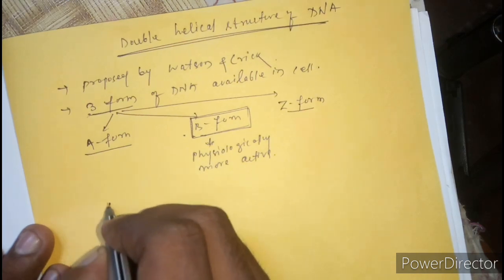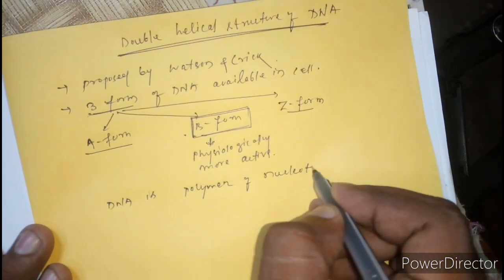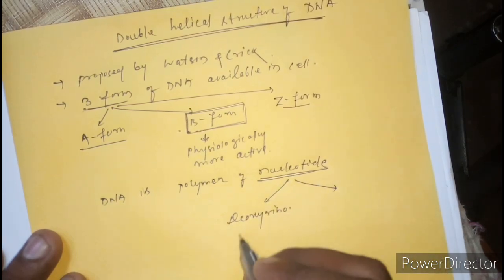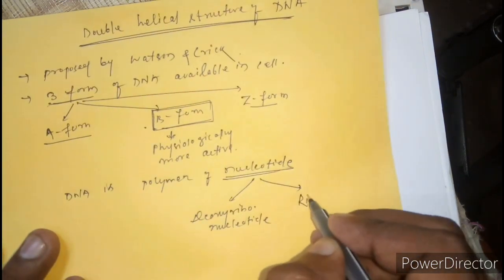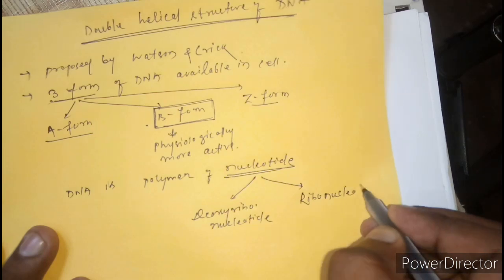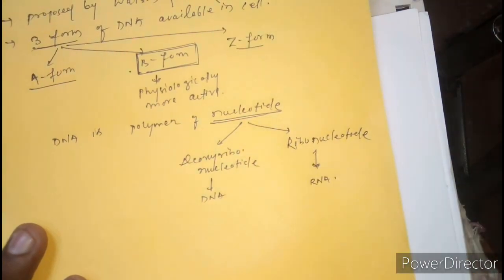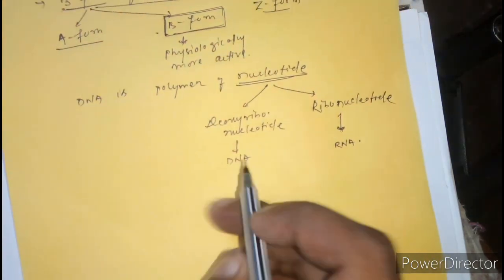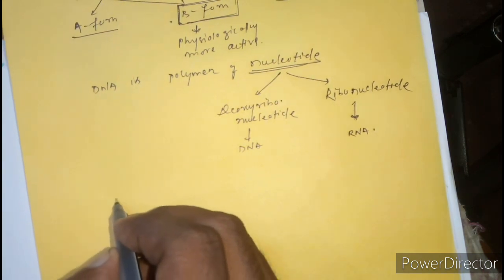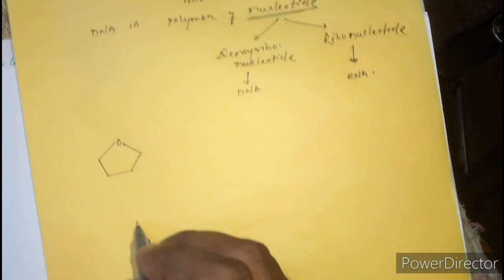We know DNA is a polymer of nucleotides, and nucleotides are of two types: one is deoxyribonucleotide and another one is ribonucleotide. Deoxyribonucleotide is present in DNA, and ribonucleotide is present in RNA. Here we will start with DNA, as we know DNA is a polymer of deoxyribonucleotide.